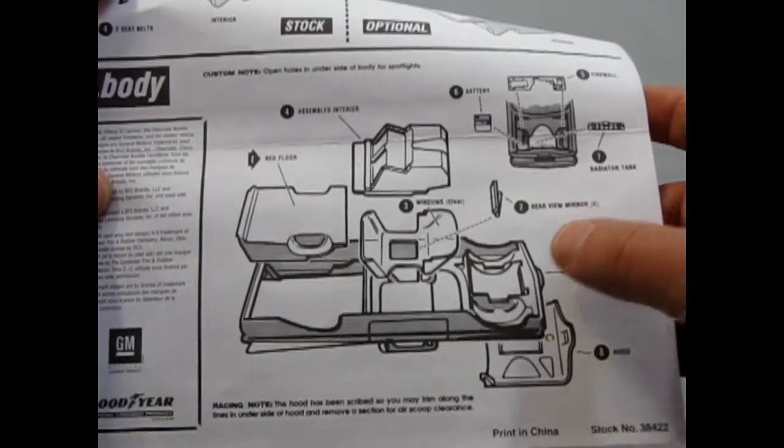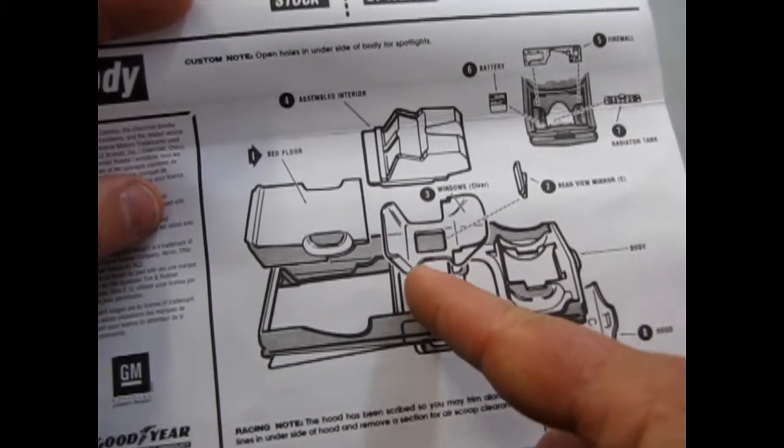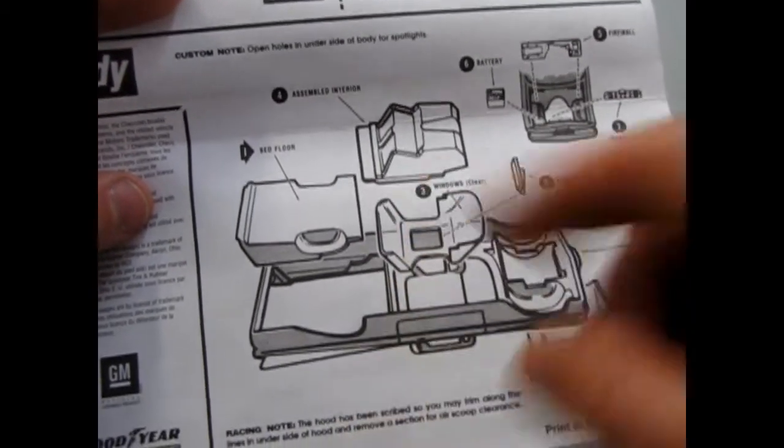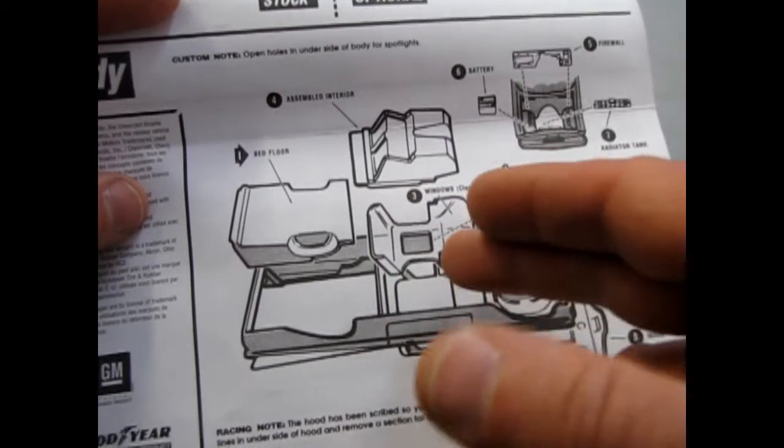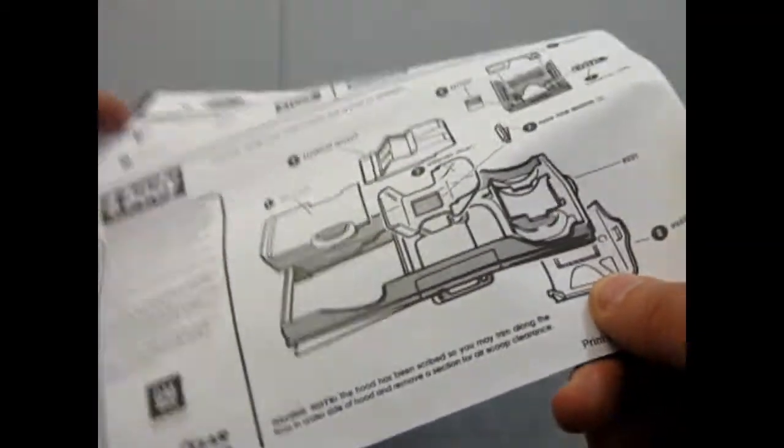Then the body pops together and like I said there's one of those mono piece glass sections with the crossbars in. Later AMT, more modern AMT kits, they've removed those and had the glass as two separate components.